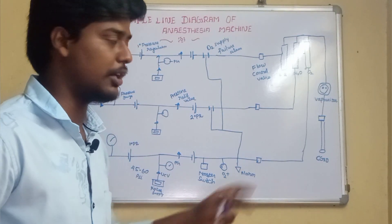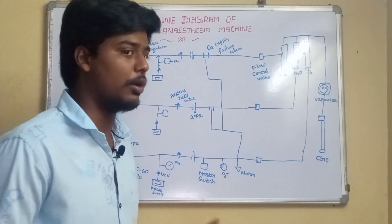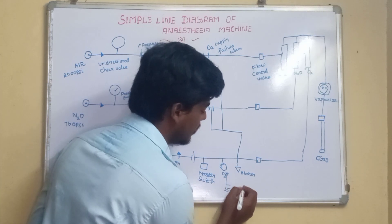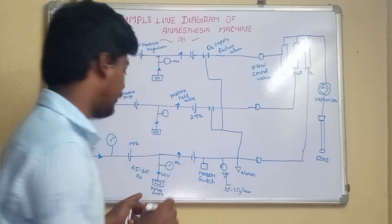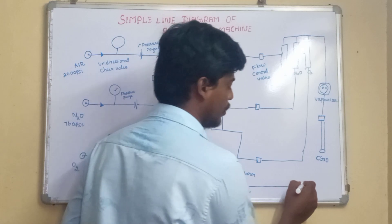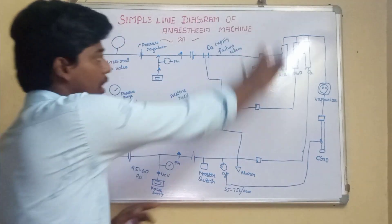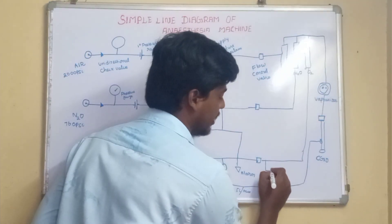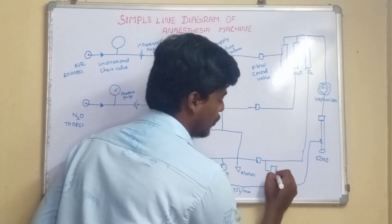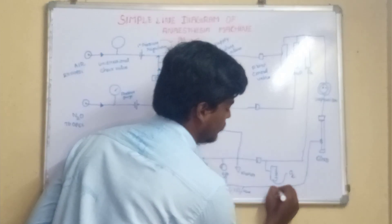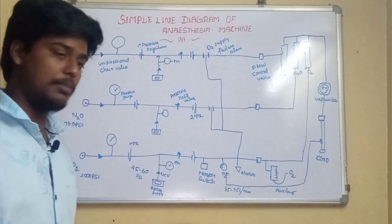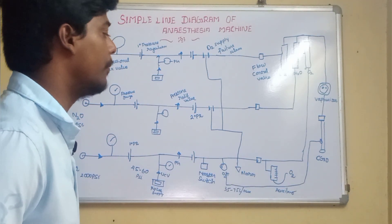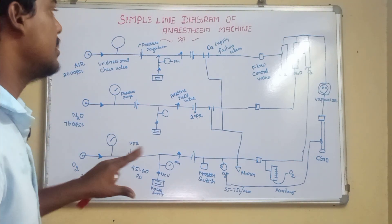At the common gas outlet, we connect breathing circuits or patient breathing circuits to provide anesthesia. The oxygen flush is an independent part of the anesthesia machine — it has a flow rate of 35 to 75 liters per minute and operates at 45 to 60 psi pressure. It connects directly to the common gas outlet, bypassing all other components in the line. There is also another independent component called the auxiliary O2 flow meter.